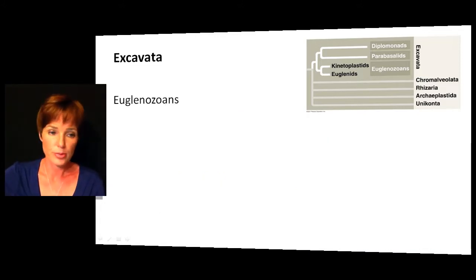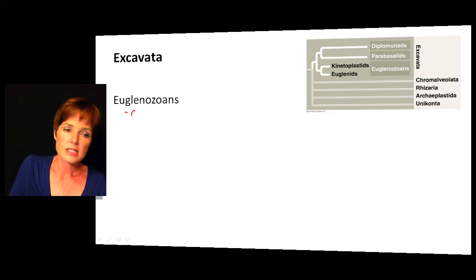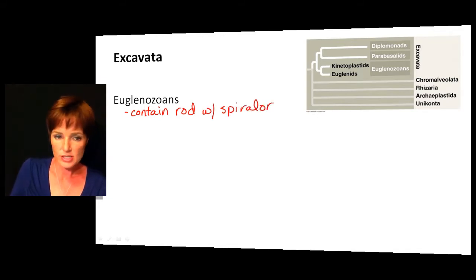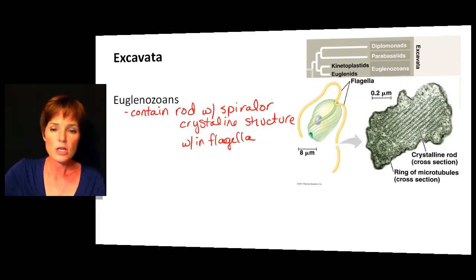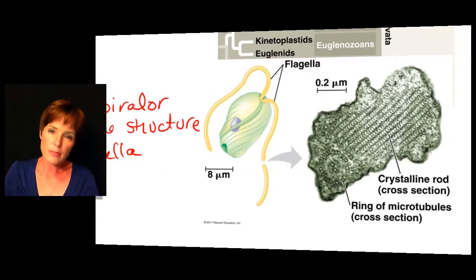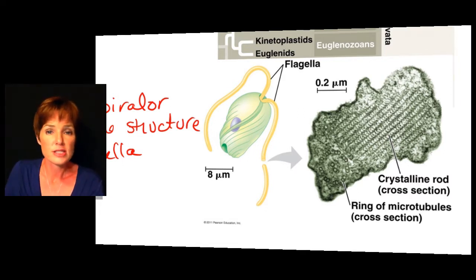The last group under Excavata is the euglenozoans, and they are extremely diverse — we have some that are predatory, some that are photosynthetic, and others that are heterotrophic. The big distinguishing thing about these is that they contain a rod with a spiral or crystalline structure within the flagella. This electron microscope picture of the flagella shows those crystalline rods. If you took a cross section of one of these protist flagella, it is unique compared to the other flagella you'll see throughout this wide-ranging group.